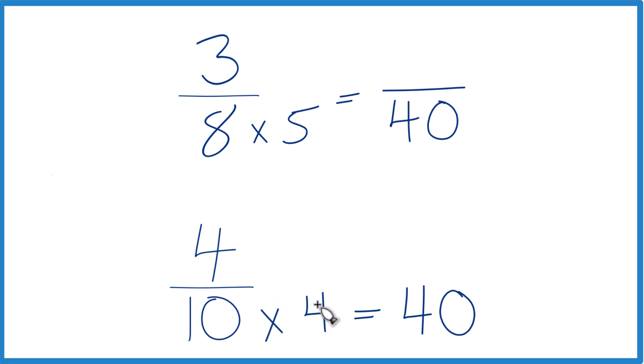Because if we multiply the denominator here by 4, we need to multiply the numerator by 4. This 4 over 4 is just 1, we're not changing the value, just the way we write it. 4 times 4 is 16. So we end up with 16 fortieths here.